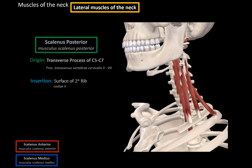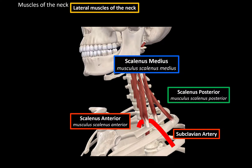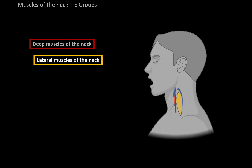Those are the lateral muscles of the neck: scalenus anterior, scalenus medius, and scalenus posterior. Now between the scalenus anterior and the scalenus medius, you'll find a large artery called the subclavian artery passing between them.